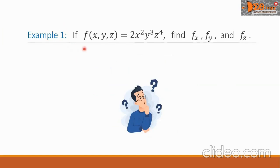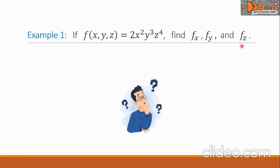Let's see Example 1. If f(x, y, z) equals 2x squared y cubed z raised to the 4th power, find f sub x, f sub y, and f sub z.